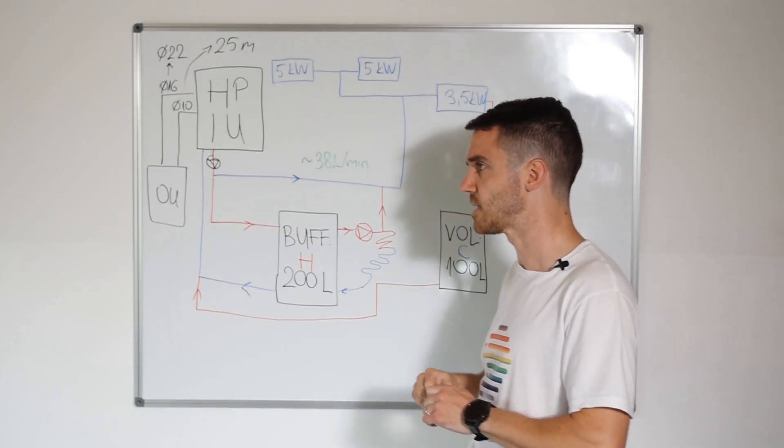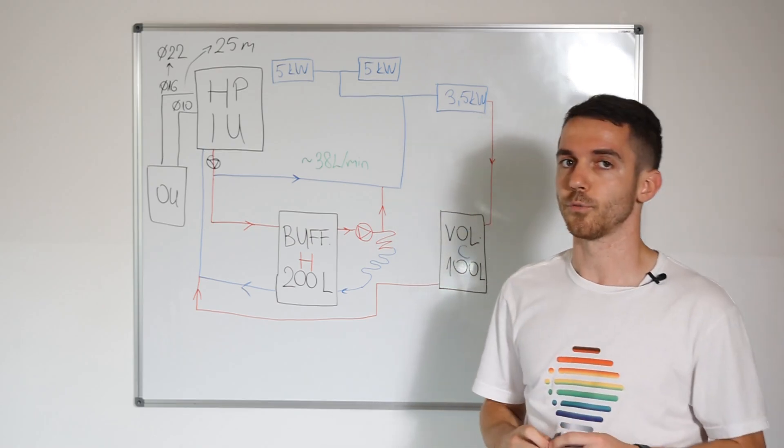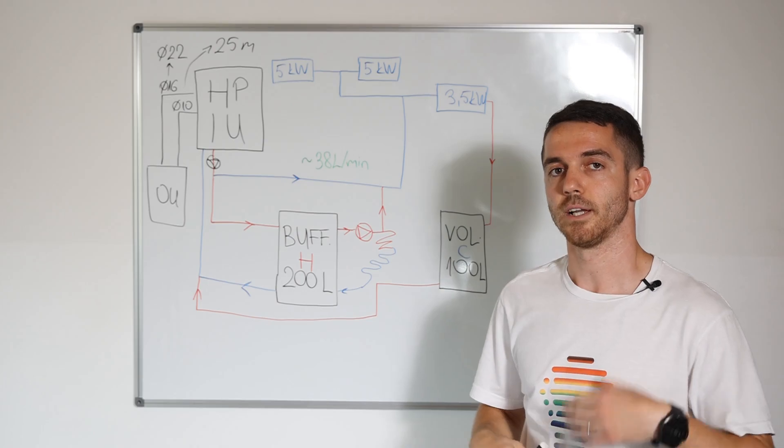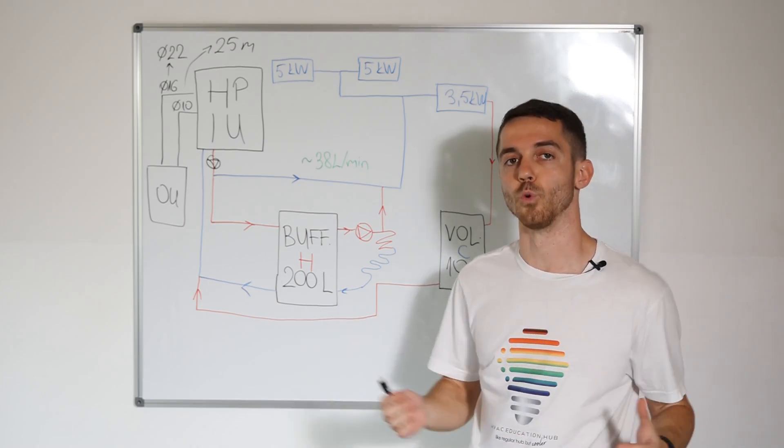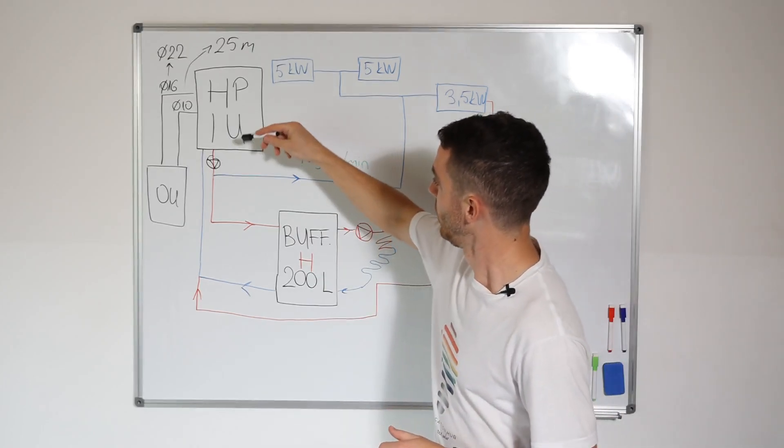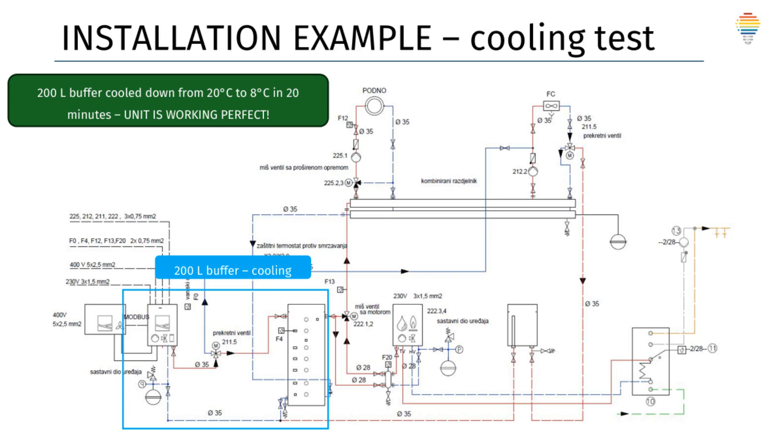Let's remove this valve and let's try to cool this big buffer. Also, what was interesting for me from consumption point of view, customer said that the expansion valve and compressor was always on full. And I said, let's see what is going on. We put only buffer, so close the valve there, close the fan coils, turned off, and tried to cool this 200 liters.